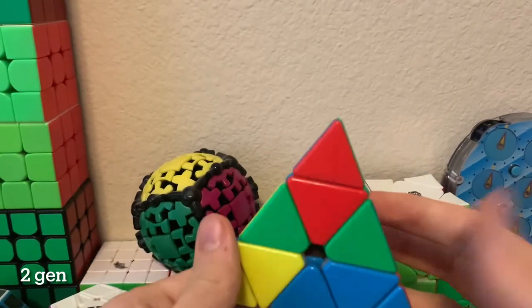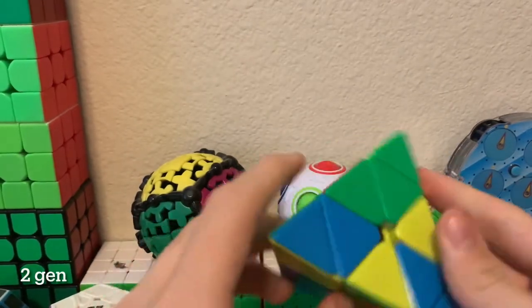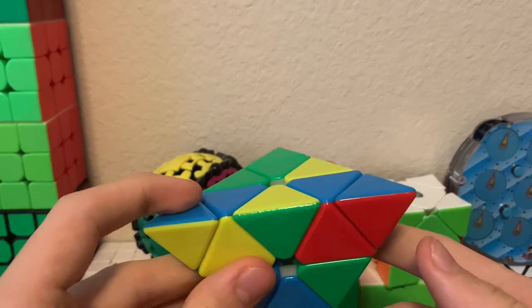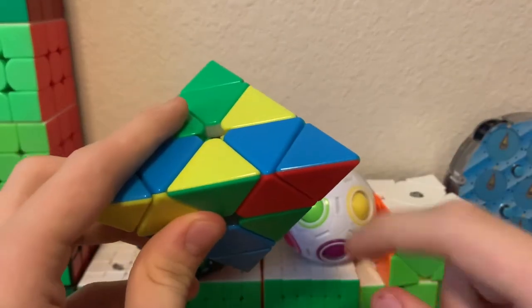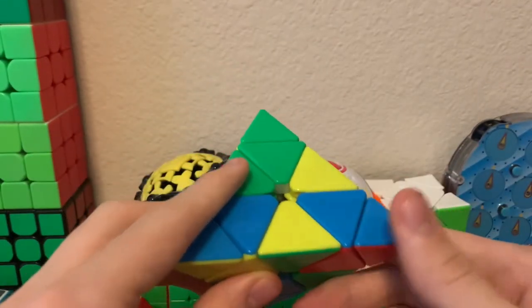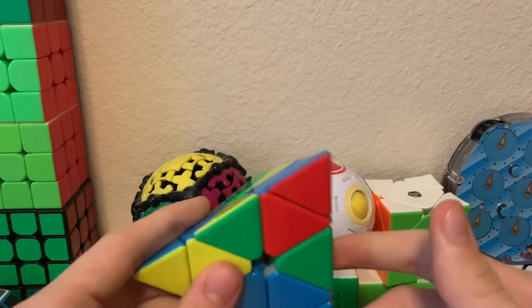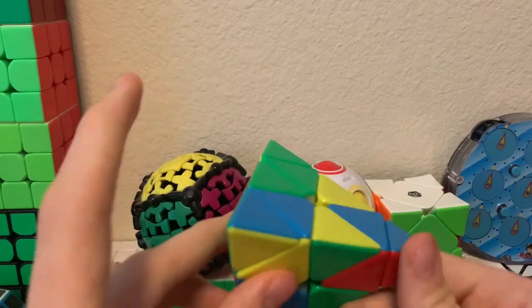We're now at a stage where the rest of the cube is 2gen. You can do this by one looking it and the algorithms are in the description if you want to learn to do that, but how I prefer to do it is by doing it fairly intuitively.